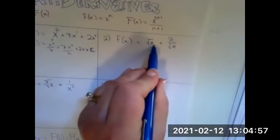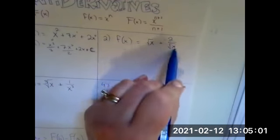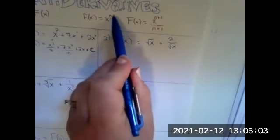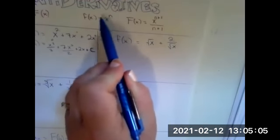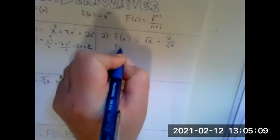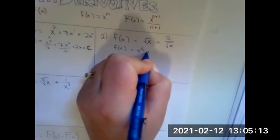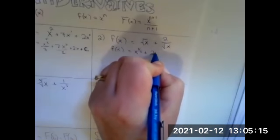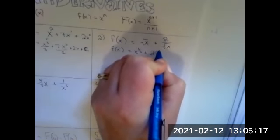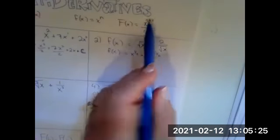We're going to do another example. Little f of X equals square root of X plus two over root X. I'm going to rewrite this with exponents because it's easiest to deal with this rule when you have things as powers. So I'll rewrite it as X to the one half plus two times X to the negative one half. That makes it easier to apply the power rule.